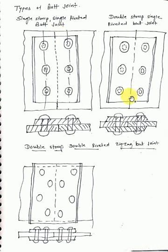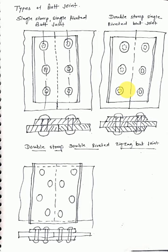Here is another configuration with two cover plates — one on top and one on the bottom — so this is called the double strap, single riveted butt joint.